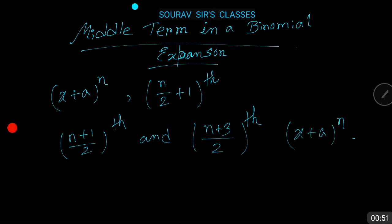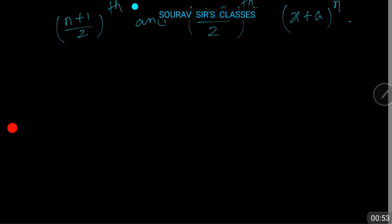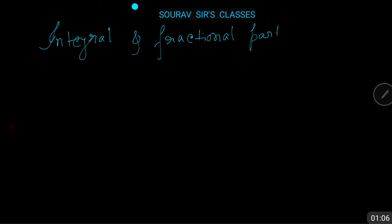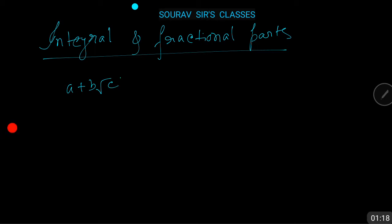Now we are going to discuss about integral and fractional parts. In order to find integral and fractional parts of irrational numbers of the form (a + b√c)^n, where a, b, c, and n are natural numbers, let us consider the following.